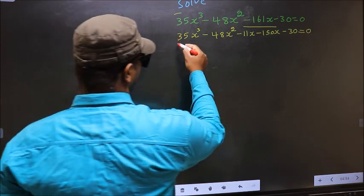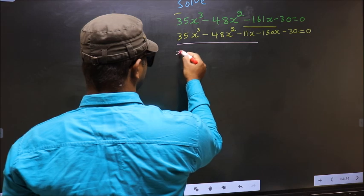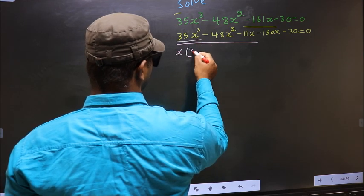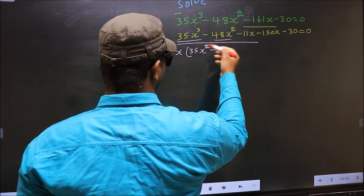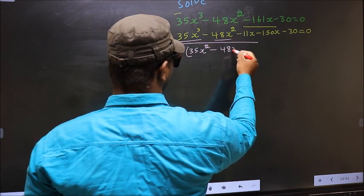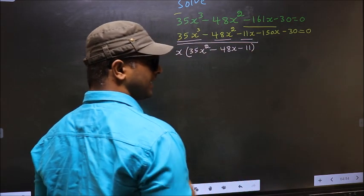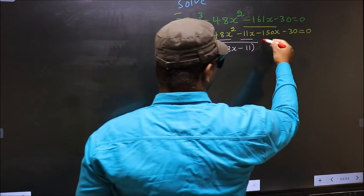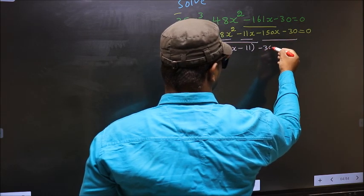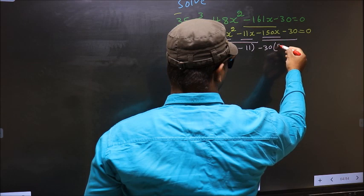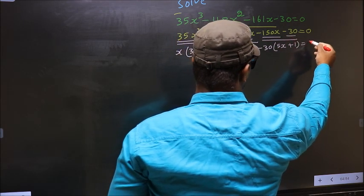What can be taken out common from the first three terms is x. So you get x times (35x² minus 48x minus 11). What can be taken out common from the last two terms is minus 30, giving 5x plus 1, equal to 0.